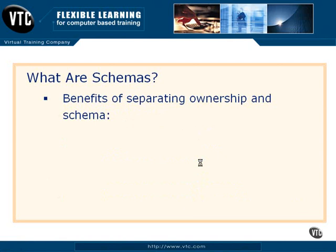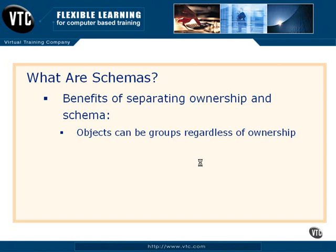What's the big benefit with separating ownership and schema? Number one, objects can be grouped regardless of ownership, which means I can have four different tables technically owned by four different people. Four different administrators created them, but they can all be part of a similar schema, and I can apply permissions across that schema to all four tables at once. In the past, every time you changed ownerships, permissions had to be checked, and we had things called broken ownership chains, which were an absolute pain to deal with.